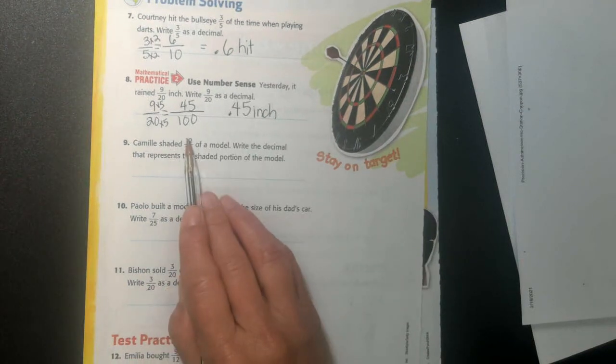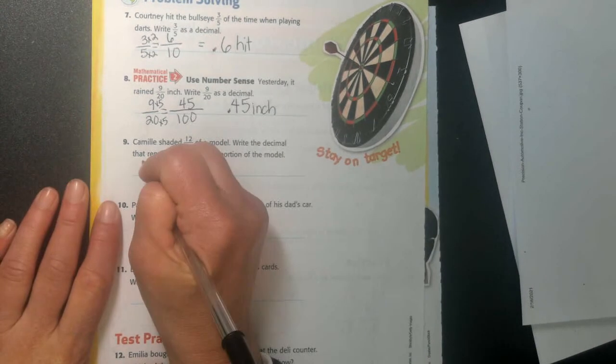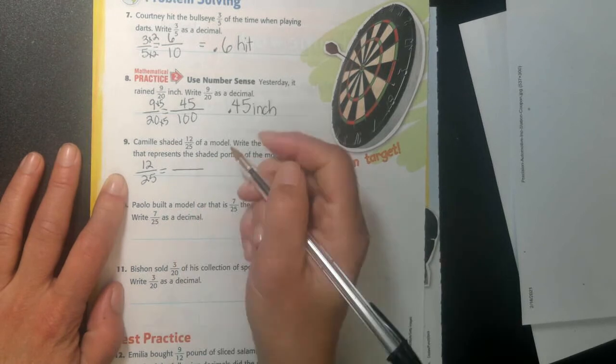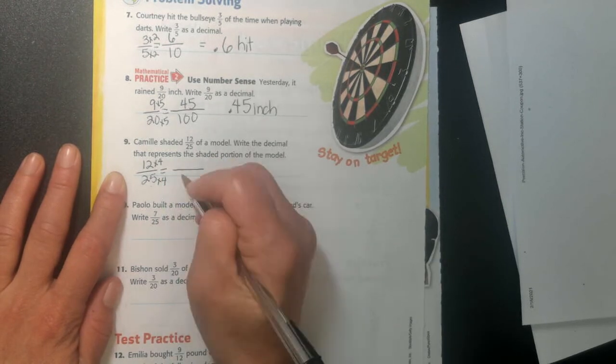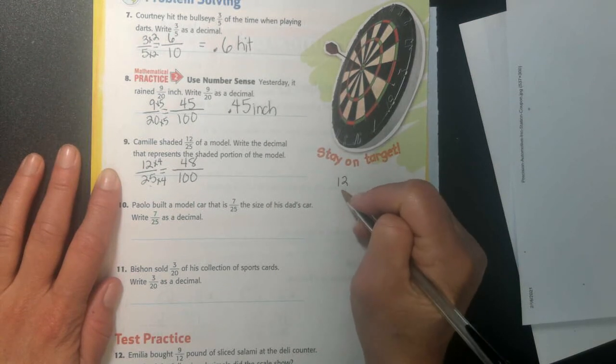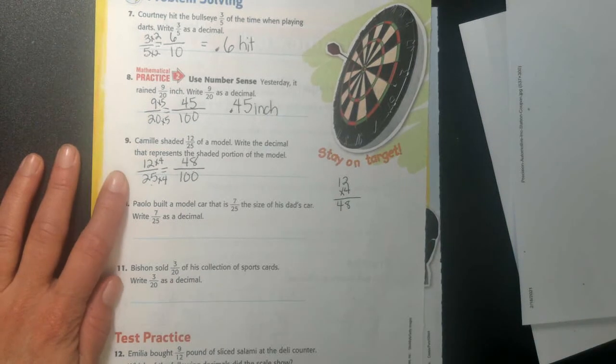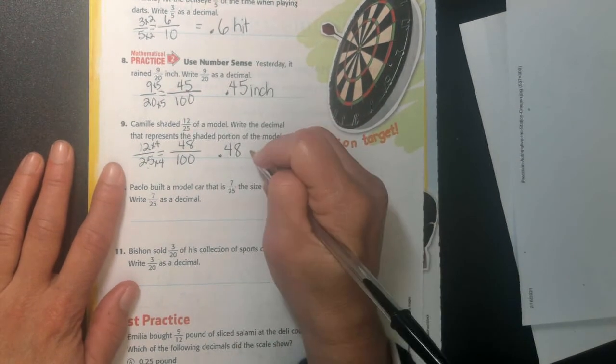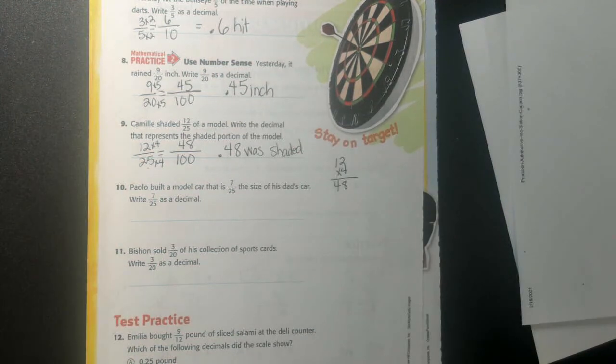So Camille shaded 12 twenty-fifths of a model. Write the decimal that represents the shaded portion of the model. Alright, so I'm just going to do the same thing again. Take my 12 twenty-fifths. She colored 12 out of 25 squares. So I'm going to say, what if she had 100 squares? How many would she have colored? Is it 48? Nice job. I'm multiplying the bottom times 4, so I multiply the top times 4. 25 times 4 is 100, and 12 times 4 is 48. Nice job. Right, I could double check it if I needed to. I could say, hi, Annalie. I could say 12 times 4 and do it over here. 2 times 4 is 8. And 4 times 1 is 4. So right, he's right, 48. So to write this as my decimal place, I'm going to say 0.48, 48 hundredths. I'm going to say was shaded. She colored in 48 out of 100 of her squares.